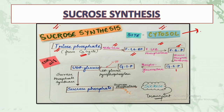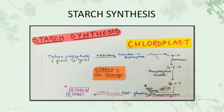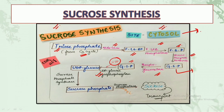Fructose 6-phosphate gets converted into glucose 6-phosphate by the enzyme hexose phosphate isomerase. Then phosphoglucomutase converts glucose 6-phosphate into glucose 1-phosphate - up to this step, starch and sucrose synthesis steps are the same. After this, UTP (uridine triphosphate) enters the process along with the enzyme UDP glucose pyrophosphorylase - this is where sucrose synthesis differs from starch synthesis.